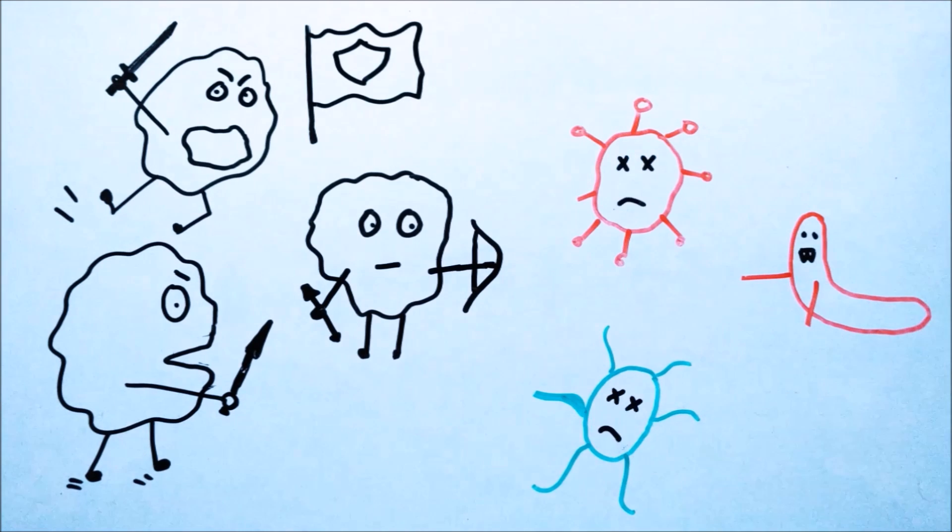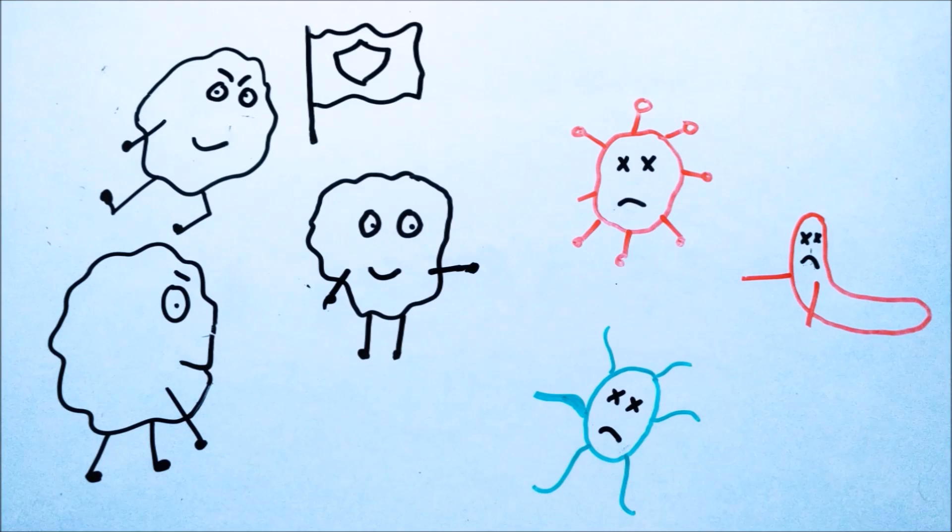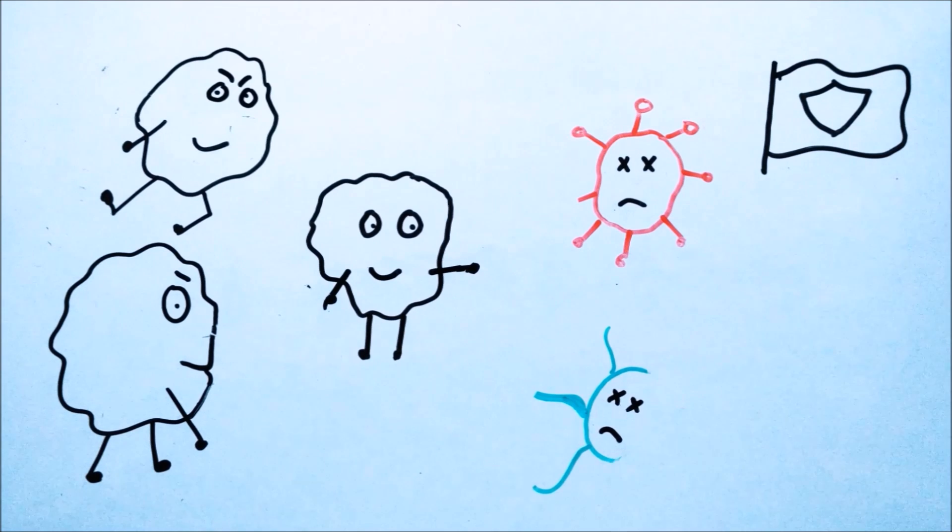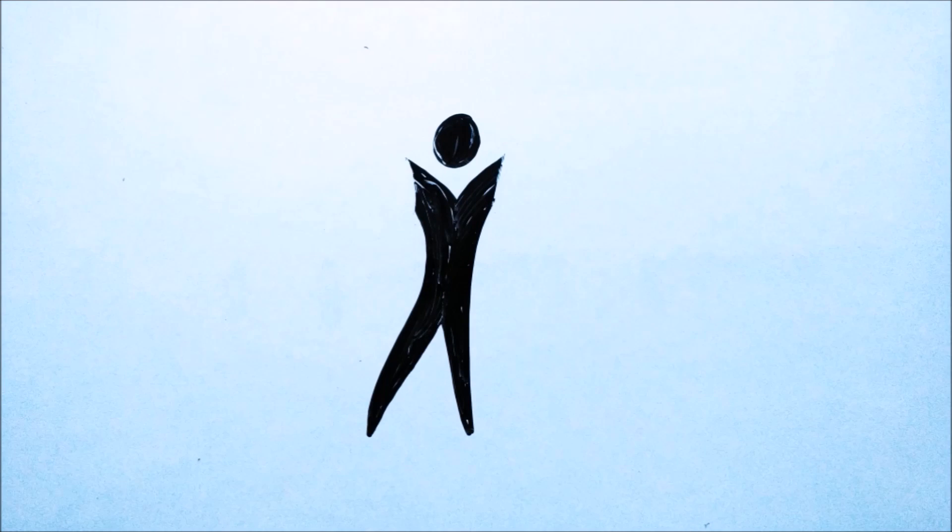Once the war between white blood cells and infectious foreign cells is over, the body comes back to its normal temperature by sweating. That's how we became active and ready to conquer the world again.